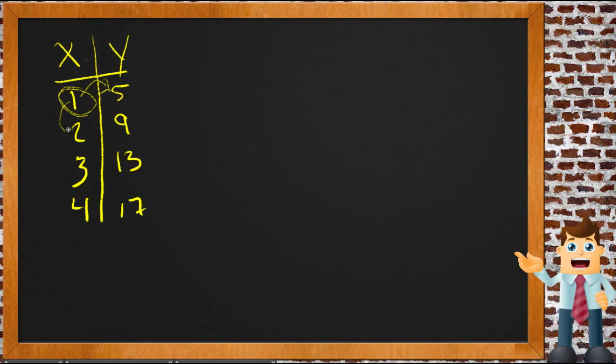We can see here that the numbers on this side go up by one each time—one to two, two to three, three to four. Numbers on this side go up by four each time.